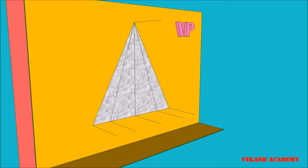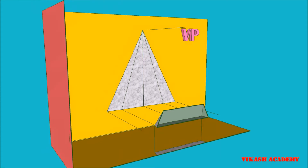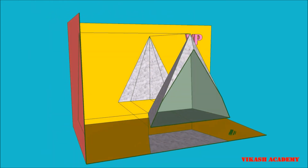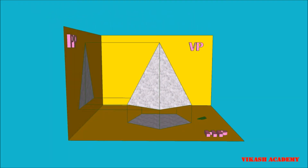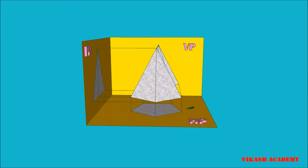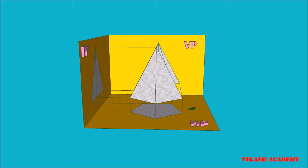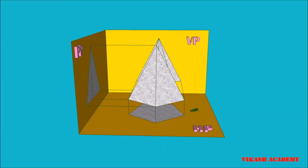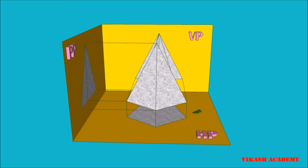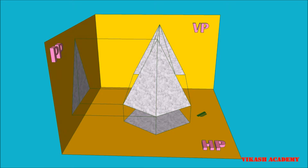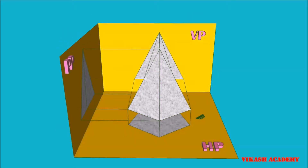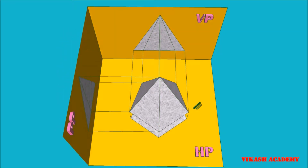By doing so, we are going to obtain some points on the vertical plane, and when we join these points we finally obtain a triangle. These three extra lines represent the faces which are visible from the front side of this pentagonal pyramid.